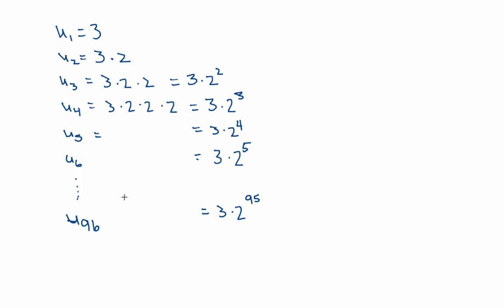And so for this specific geometric sequence, I can say that Un is going to be the first term 3 times 2, and the exponent is going to be one less. That's for this specific term.